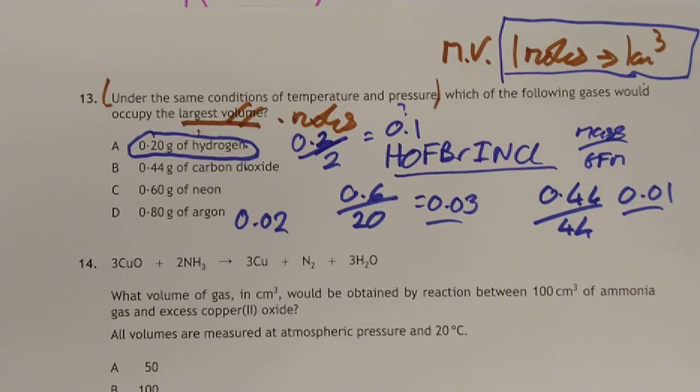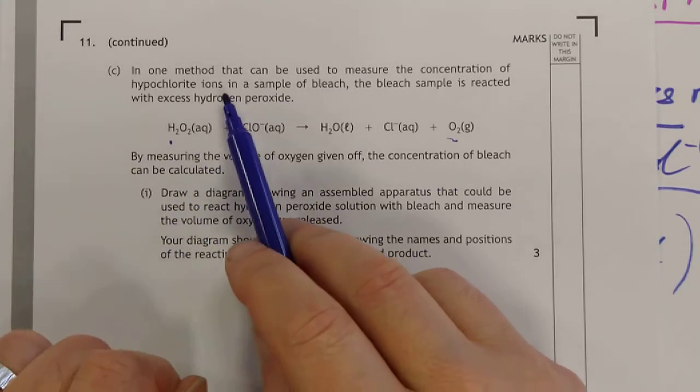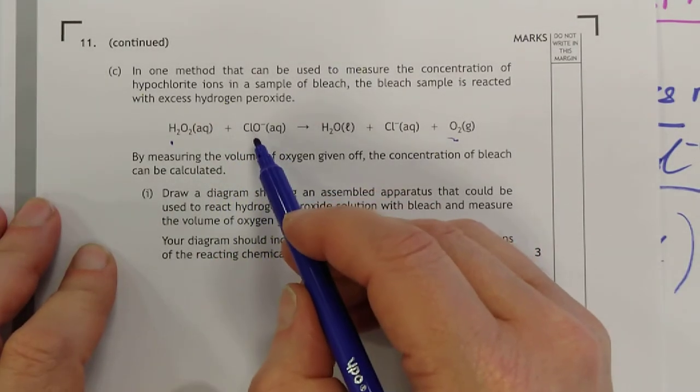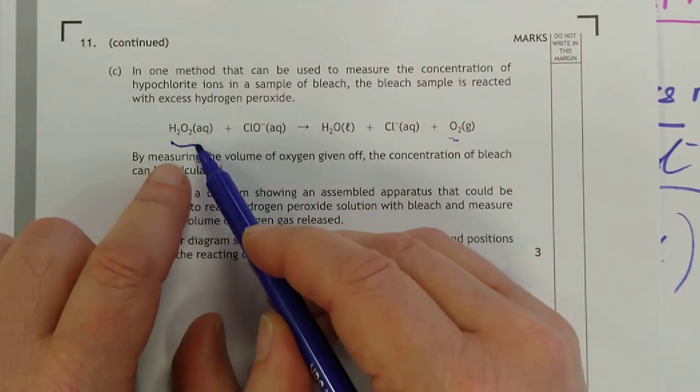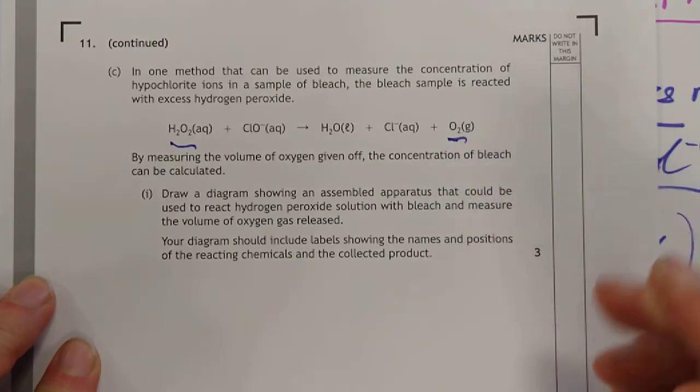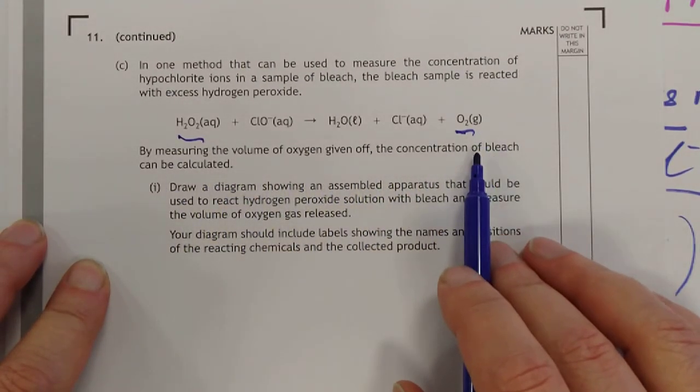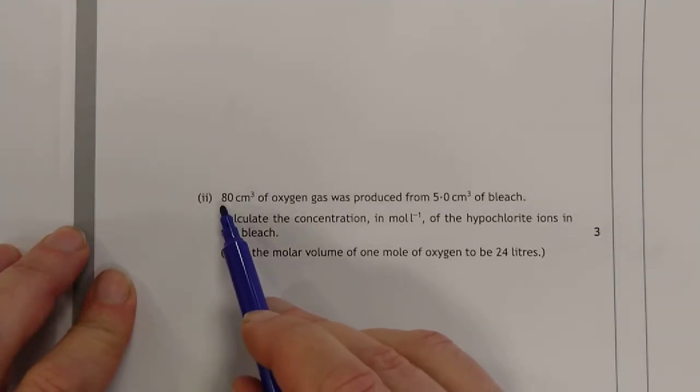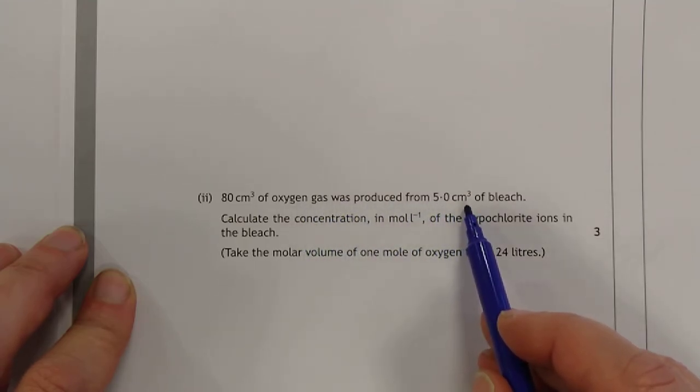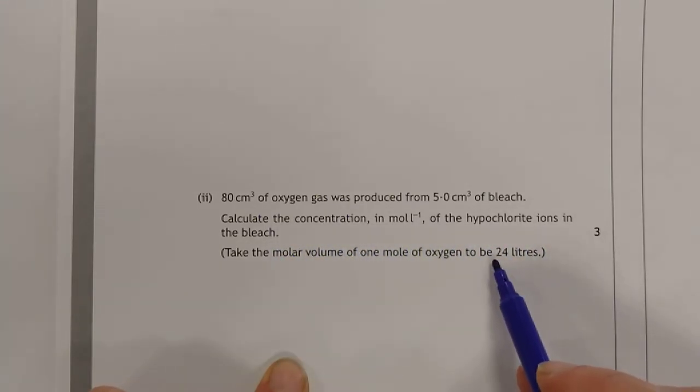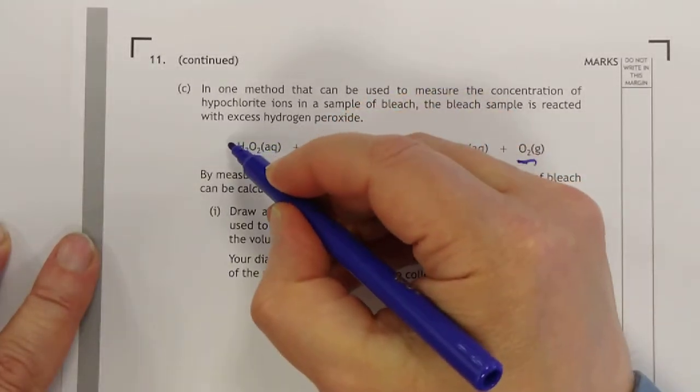Let's find one last one, which frankly is a bit of a nightmare one. We've got a reaction that can be used to measure the concentration of hypochlorite ions in a sample of bleach. SQA love asking about hypochlorite. So here, you're reacting this chemical here, hydrogen peroxide, with the ClO- ion, which is the hypochlorite ion, and we make water, Cl- ions, and oxygen gas. And it says, by measuring the volume of oxygen given off, the concentration of bleach can be calculated.